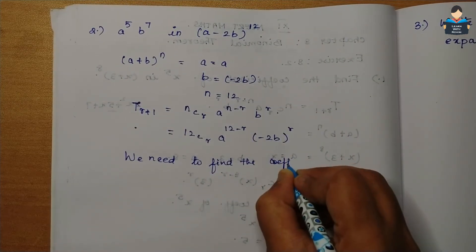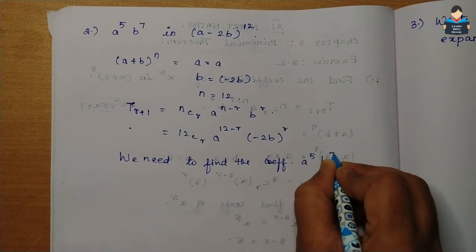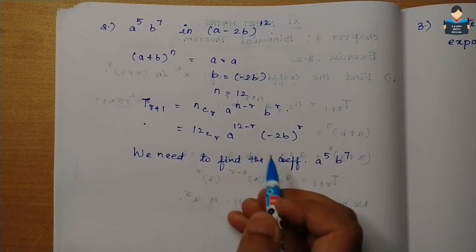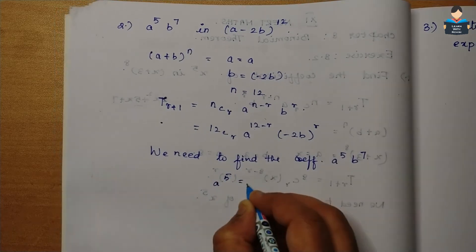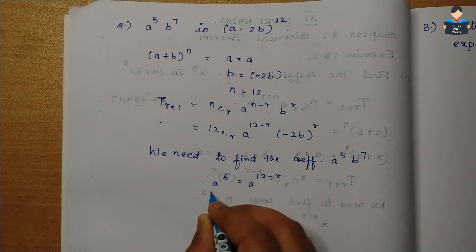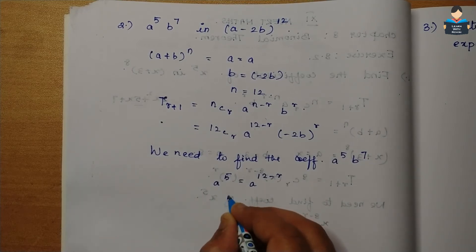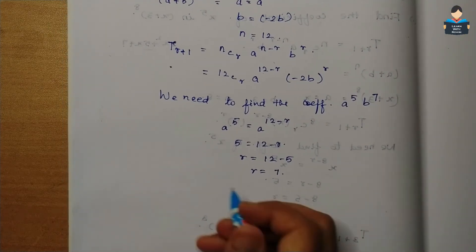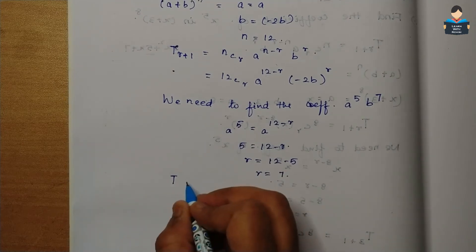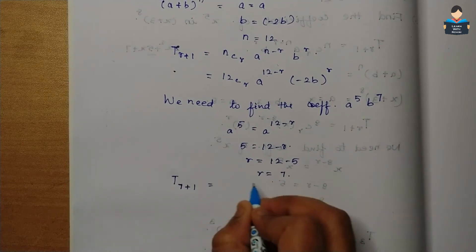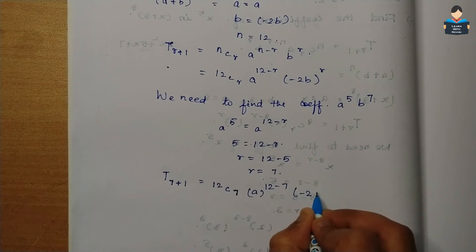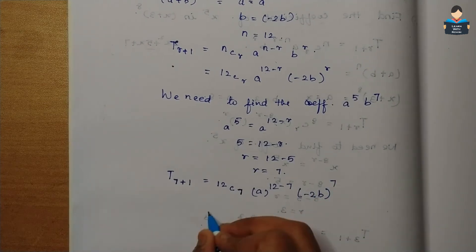We need to find the coefficient of a⁵b⁷. Equating a to the power (12−r) with a to the power 5: since bases are the same, 5 equals 12 minus r, so r equals 12 minus 5, which gives r equals 7. Substituting r = 7: T₈ = 12C7 · a to the power (12−7) · (−2b) to the power 7.